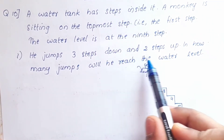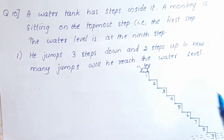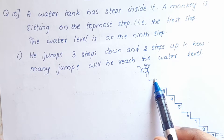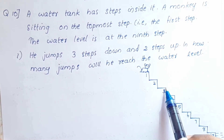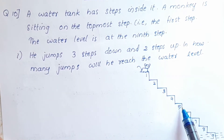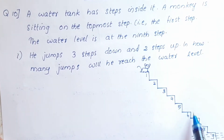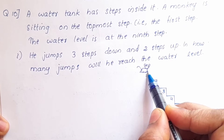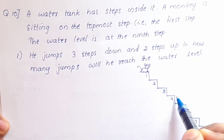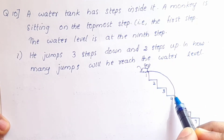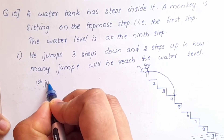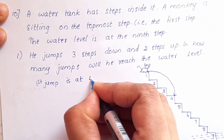The monkey jumps 3 steps down and 2 steps up each move. The question asks: how many jumps will it take for the monkey to reach the water level at the 9th step? In the first jump, the monkey goes 3 steps down, landing on the 4th step.